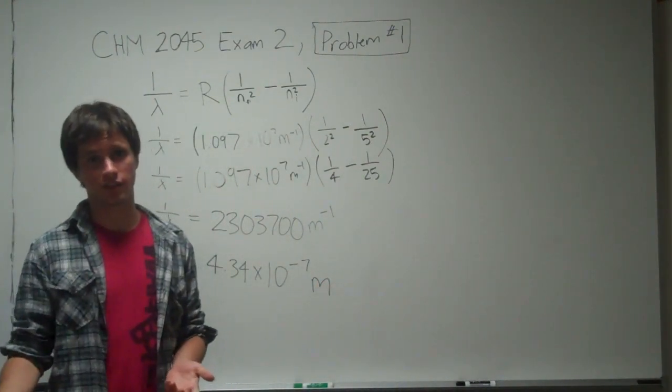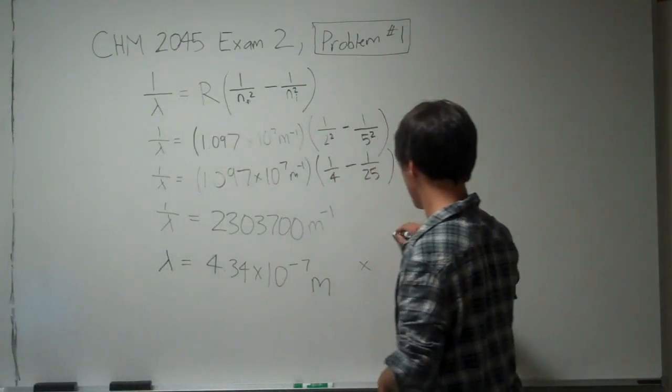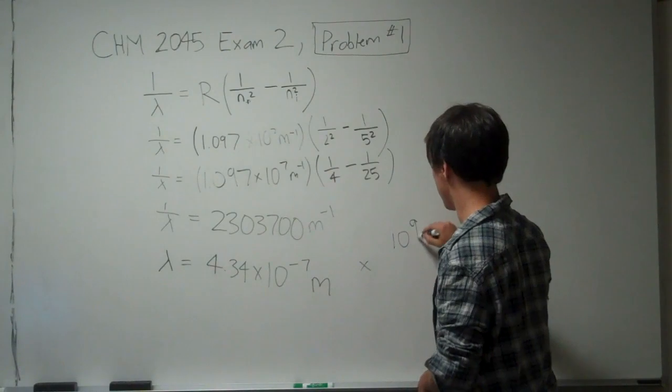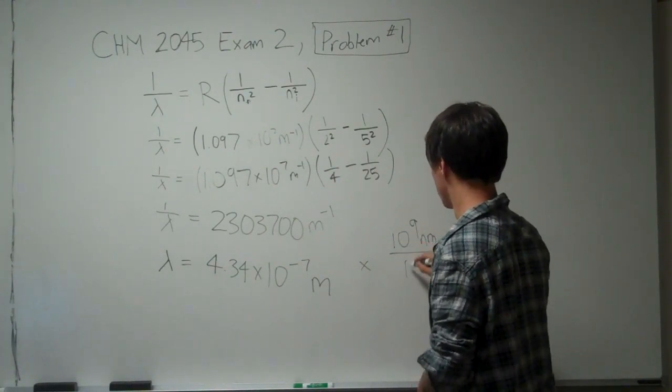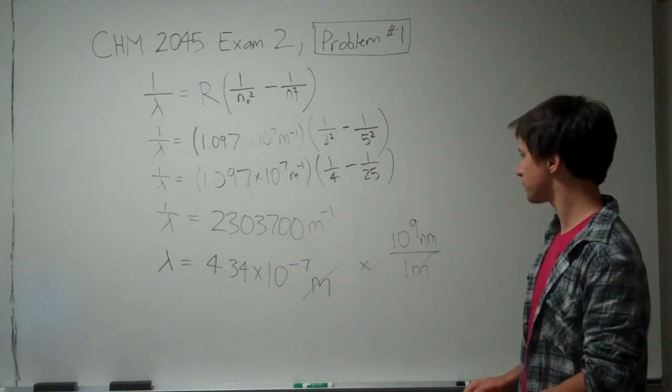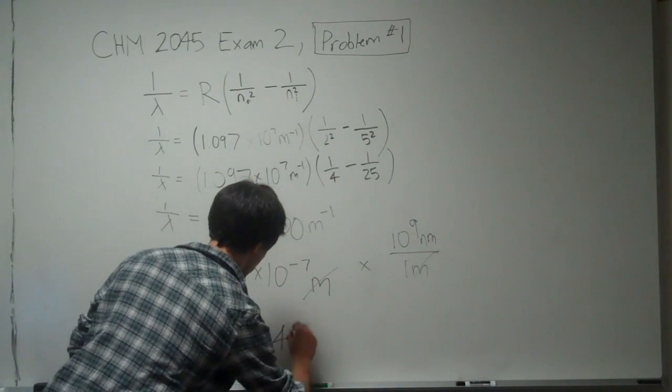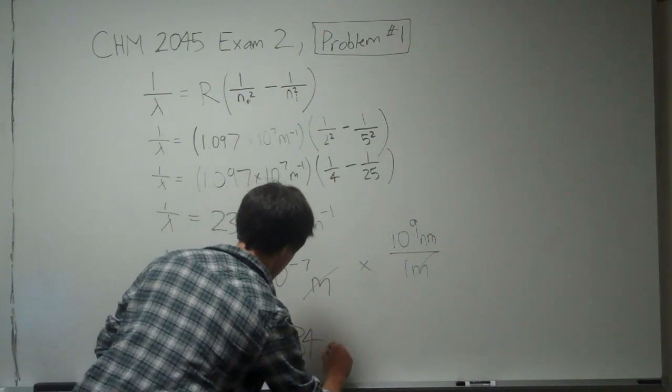But the problem asks for the wavelength in nanometers. So the conversion factor for that is 10 to the 9 nanometers per 1 meter. The meters are going to cancel out. And so the answer is 434 nanometers, which is choice B on the test.